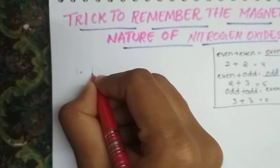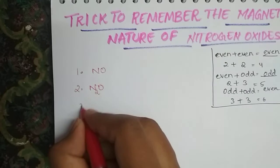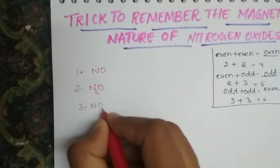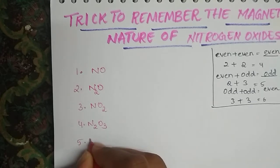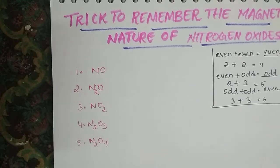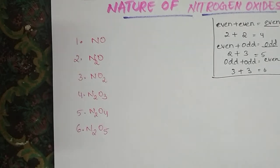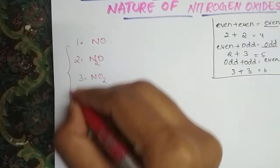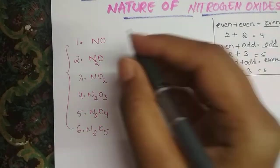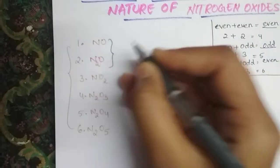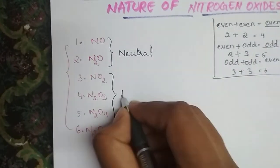We have six oxides of nitrogen: NO, NO2, N2O, N2O3, N2O4, and N2O5. First of all, we have to know that the starting two oxides — NO and NO2 — are neutral in nature, and the remaining ones are acidic in nature.